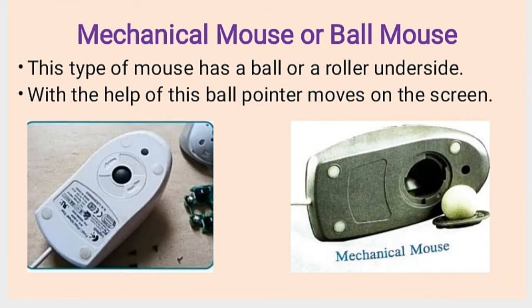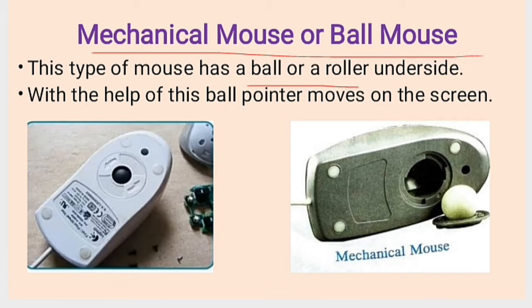Now, what is a mechanical or ball mouse? This type of mouse has a ball or a roller on its underside. With the help of this ball, the pointer moves on the screen. We have already learned that the mouse pointer moves with the help of mouse movement — so in a mechanical or ball mouse, the mouse moves with the help of this ball.